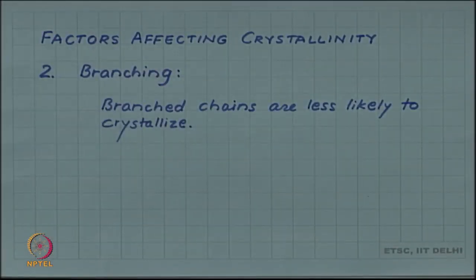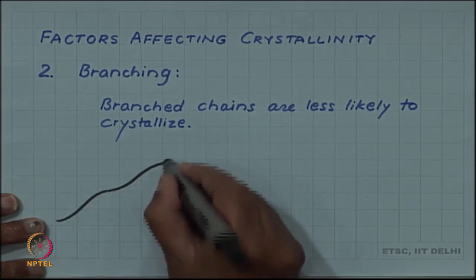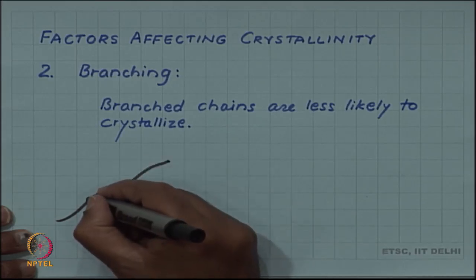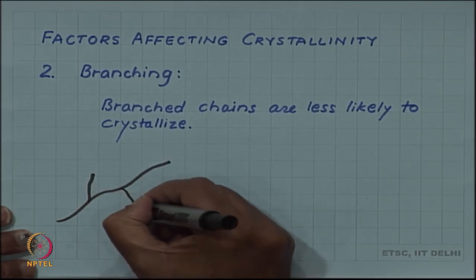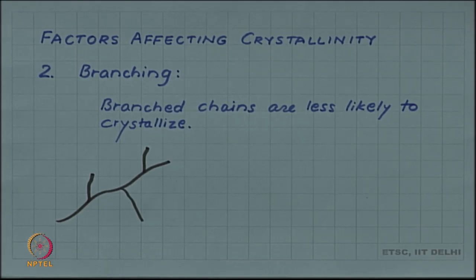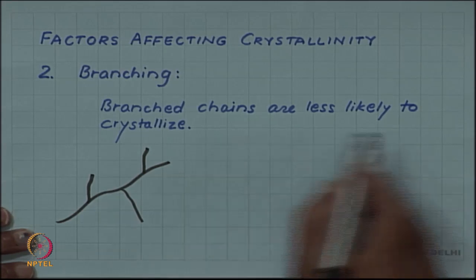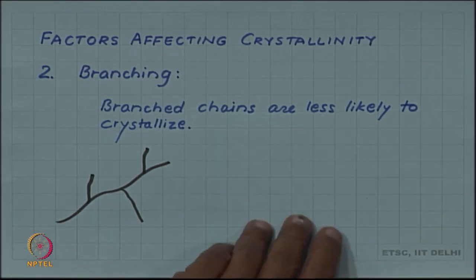Another factor which affects crystallinity is branching. If you recall, there is a polymer backbone, and on that backbone sometimes you can have side branches. If you have branched chains, it will be more difficult to fold them and pack them periodically. These branches will come in the way of crystalline packing of the polymer chains. So branched chains are less likely to crystallize.